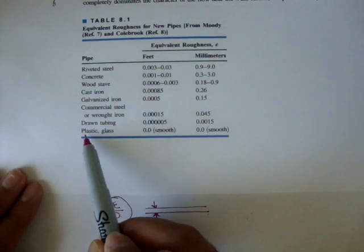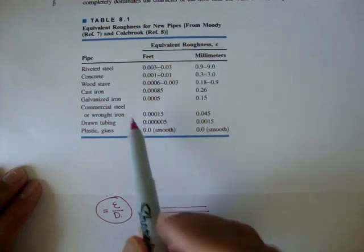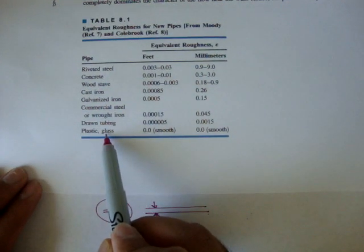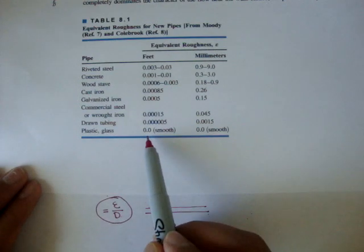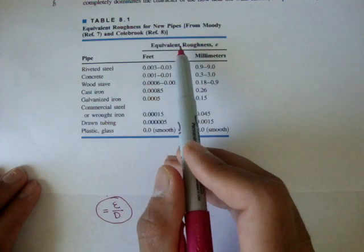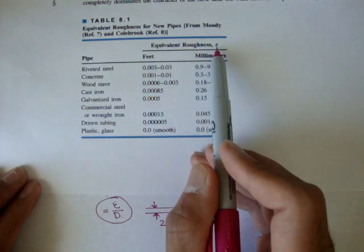These were all figured out using experiments. If you look at the bottom, my book, or at least this chart, says plastic and glass. If a pipe is made out of plastic or glass, their equivalent roughness, epsilon, is 0.